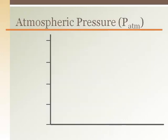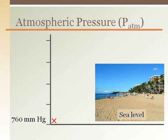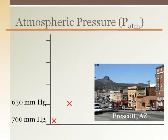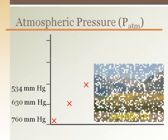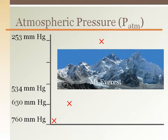Changes in altitude affect the atmospheric pressure. At sea level, the atmospheric pressure is 760 mmHg. Going up to a mile-high city like Denver, Colorado or Prescott, Arizona reduces the atmospheric pressure to around 630 mmHg. Leadville, Colorado is the highest city in the United States with an atmospheric pressure of 534 mmHg. An expedition to Mount Everest in 1981 made the first atmospheric pressure measurement at 253 mmHg.